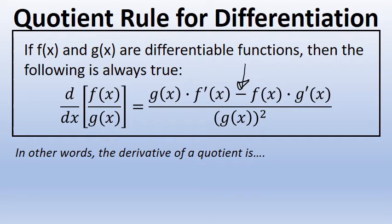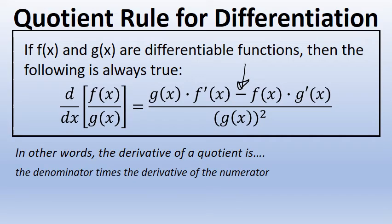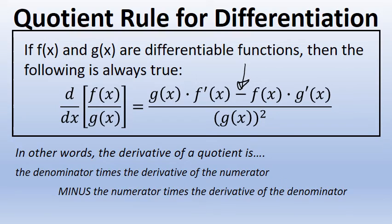In other words, the quotient rule states that the derivative of a quotient is the denominator unchanged times the derivative of the numerator minus the numerator unchanged times the derivative of the denominator all over the square of the original denominator.